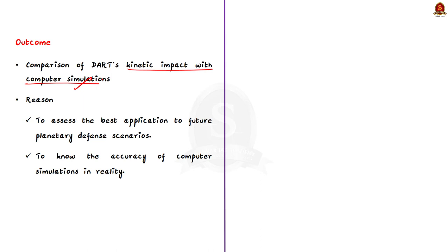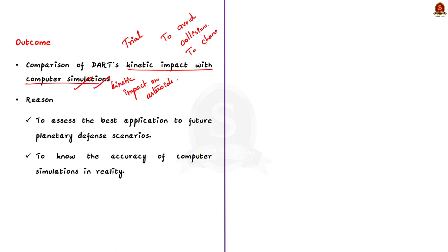This is essentially a trial. We already have computer simulations of kinetic impacts on asteroids — created because, in the future, if an asteroid or near-earth object poses the threat of colliding with Earth, we can use those simulations to change its direction. But to confirm whether those simulations work in reality, the DART test is conducted. This is to assess how best it can be applied in future planetary defense scenarios and to know how accurately the simulations reflect the behavior of a real asteroid.